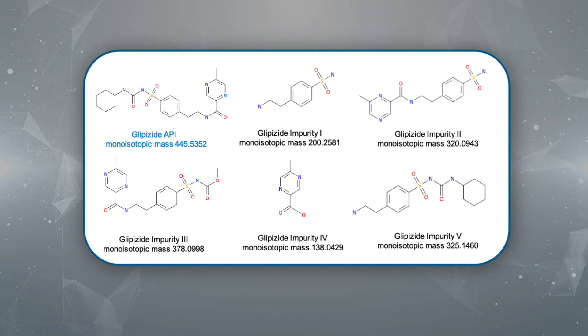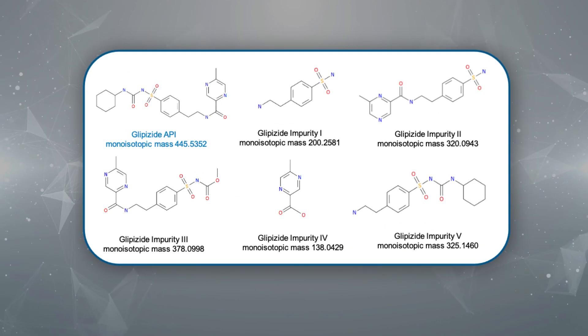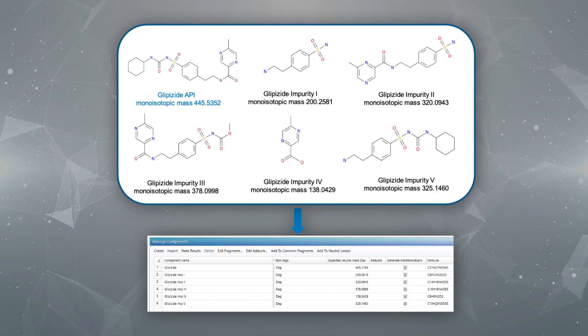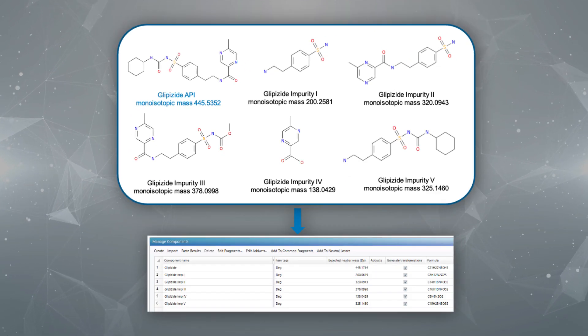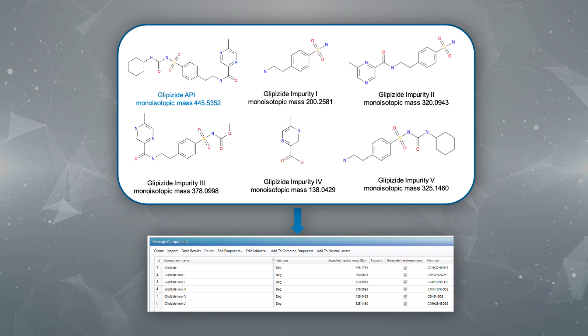As an example, a targeted workflow has been set up to assess the degradation of the anti-diabetic drug glipizide under acidic, basic and oxidative conditions. Using the processing method within UniFi, we have imported mol files of the glipizide parent drug and five known impurities. UniFi will use this information to interrogate the data generated and intelligently assign identified compounds and fragments.